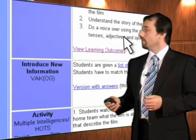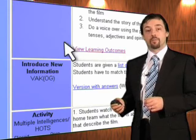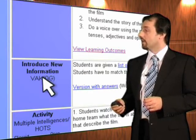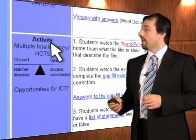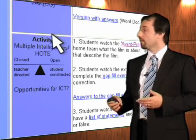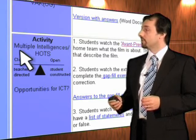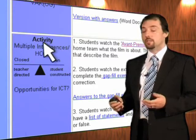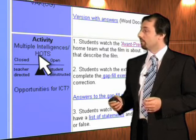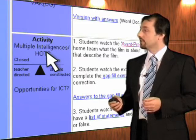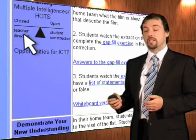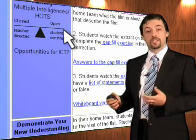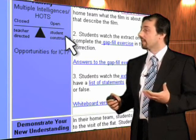As I scroll down, we get to the introduce new information part of the cycle, and if possible, do that through all of the senses. Then the activity part of the cycle. Do we get students to flex their multiple intelligence muscles? Do we get students to do some higher-order thinking skills? Is the activity a closed teacher-directed activity or an open student-centered activity or a student-constructed activity?